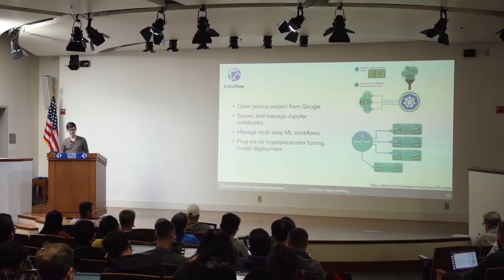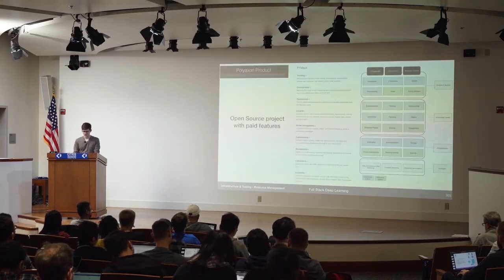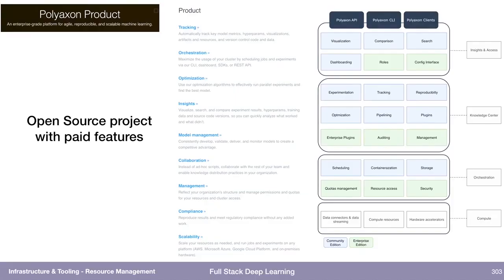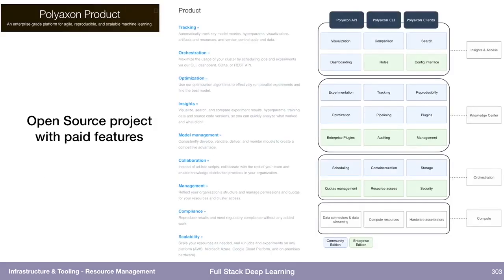Kubeflow also has a bunch of plug-ins for tuning hyperparameters and deploying models. PolyAxon is another open source project with similar functionality — there are enterprise features but it seems pretty similar to Kubeflow. Kubeflow seems like a more actively developed project, but PolyAxon is worth mentioning in case someone finds it useful.